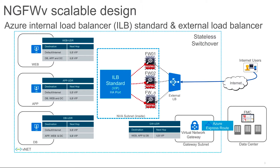Another common scenario is when you have your data center connected to Azure cloud using ExpressRoute. You can use this model and still forward traffic to the firewall for inspection.